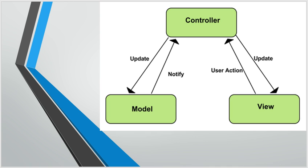A model can be a JavaScript object or a JSON object. It can be a PHP object with setter and getter methods, a Java object (plain old Java object), a Java bean with setter and getter methods, or a DTO — that is, a Data Transfer Object. It can also be a Value Object.